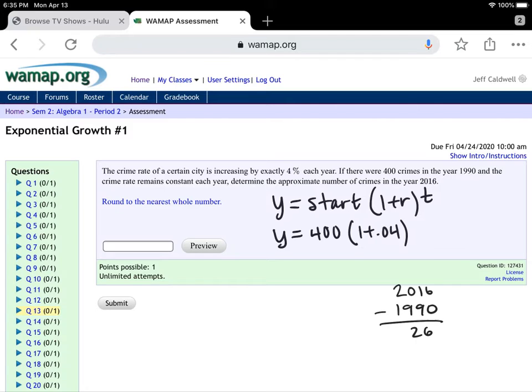2016 minus 1990 is 26. So I'm going to go to the power of 26. So 26 times you'll increase 4%. And 400 times 1.04 to the power of 26, it says round to the nearest whole number, would be 1,109.